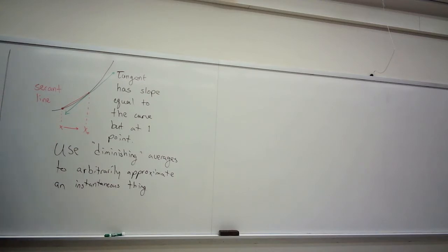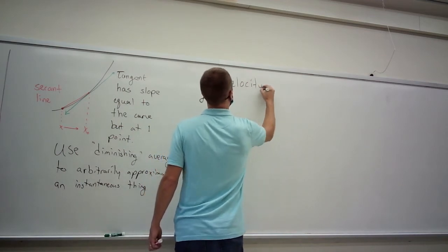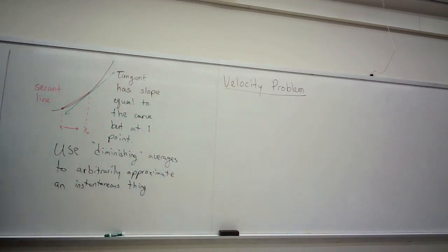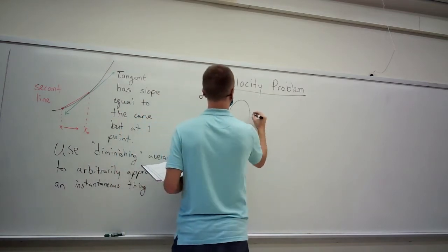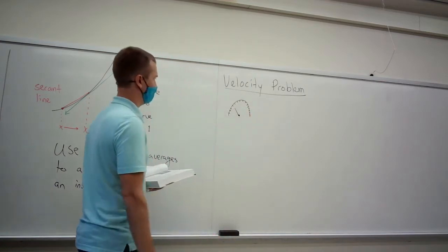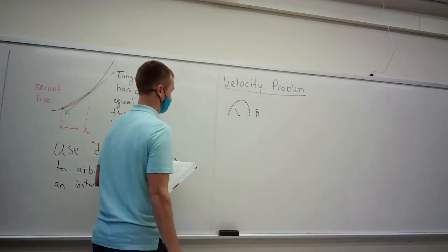That's the review of what we did last time. Now we're going to apply that to a very specific approximation problem called the velocity problem. This is a direct application of finding the tangent thing we've just discussed. It has to deal with an object's velocity at any point in time. When you drive your car, you see a nice thing in front of you — it's the speedometer.